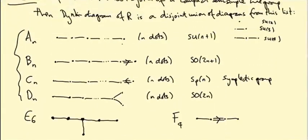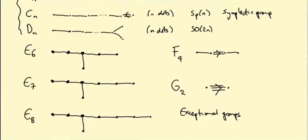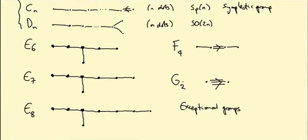the possible Dynkin diagrams are as follows. There are the AN Dynkin diagrams, the BN Dynkin diagrams, CN and DN. There's E6, E7, E8, F4 and G2.